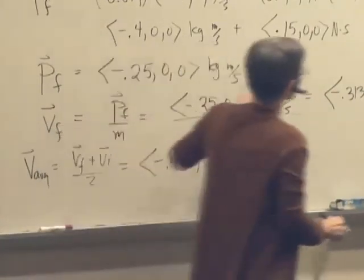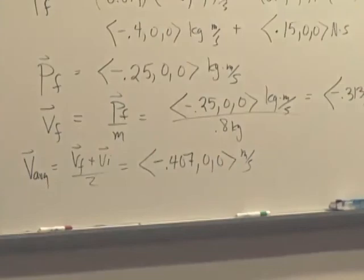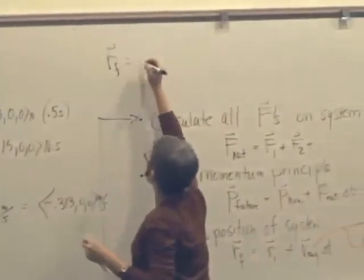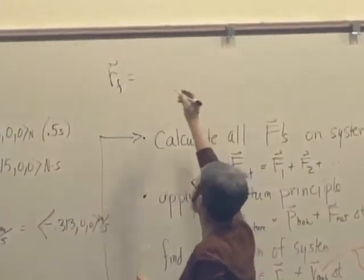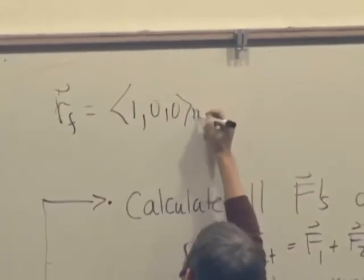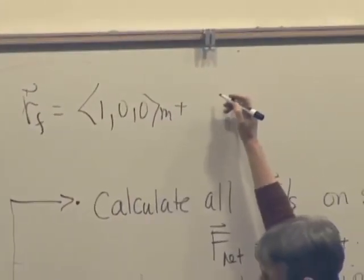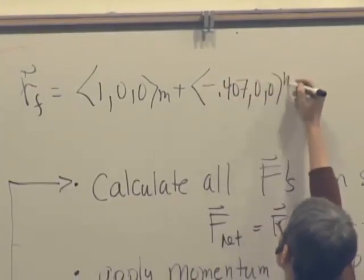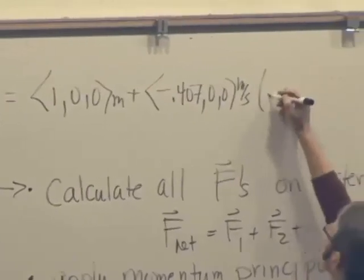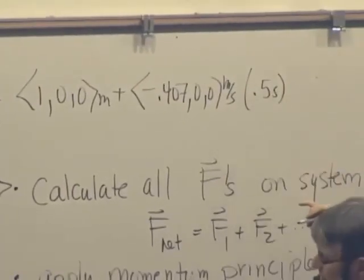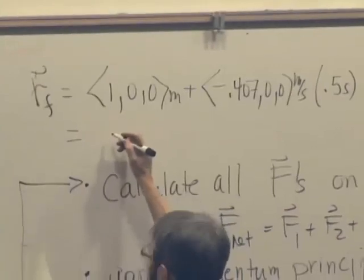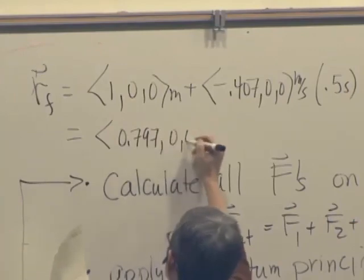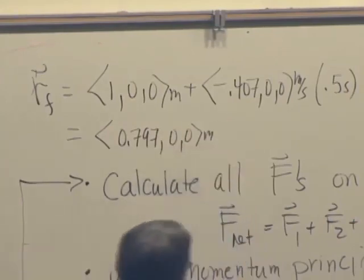And now we need to use that to update the position. So we say r final is r initial, which was 1.00 meters plus V average, which was negative 0.4070 meters per second times delta T, which was 0.5 seconds. And that comes out to 0.7970 meters. So that's where it is.